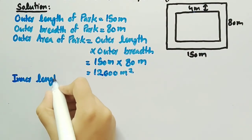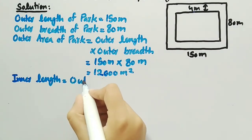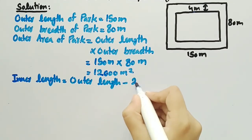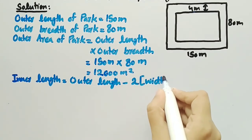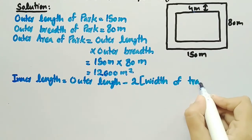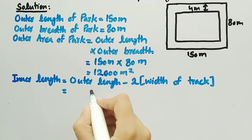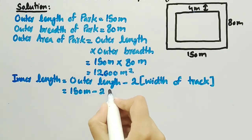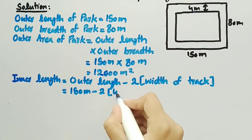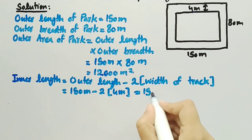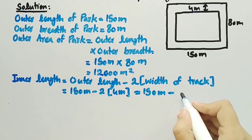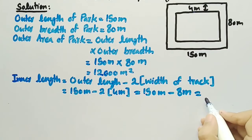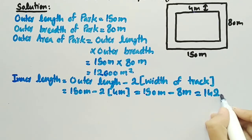The inner length is equal to outer length minus two times the width of the track, which is 150 meter minus 2 times 4 meter. That equals 150 meter minus 8 meter, which is equal to 142 meter.